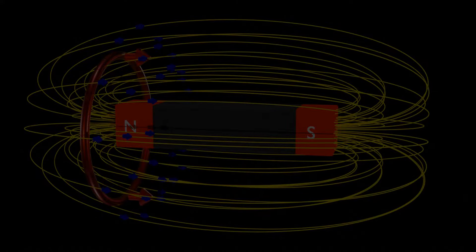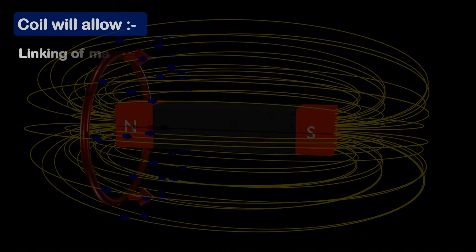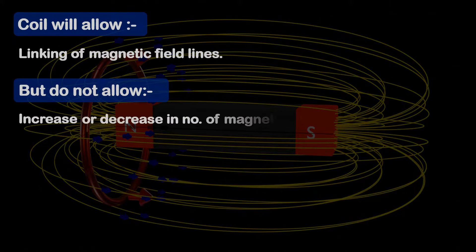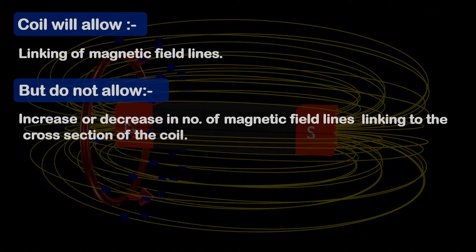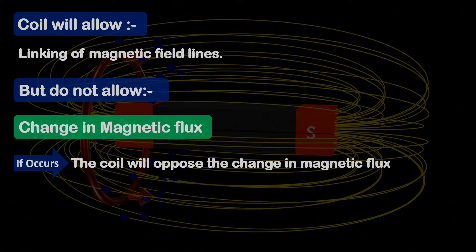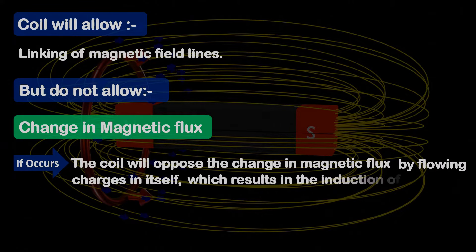The coil will allow linking of magnetic field lines, but not any increase or decrease in the number of magnetic field lines linking to the cross-section of the coil, or any change in magnetic flux. If any change of magnetic flux occurs, the coil will oppose it by flowing charges in itself, resulting in the induction of electric current. In short, the only thing the coil wants is to restrict the magnetic flux change.